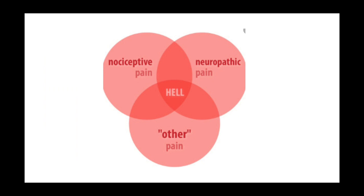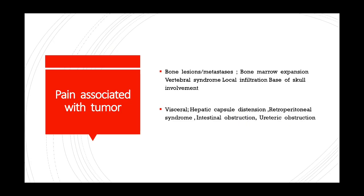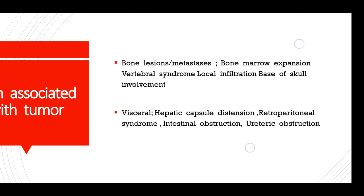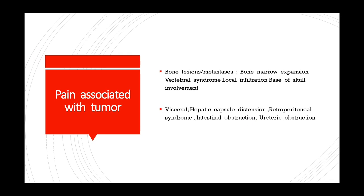This figure shows the different types of pain that can be described by a patient with malignancy. Pain associated with the tumor could be bone lesions resulting from metastasis, such as bone marrow expansion, vertebral syndrome, or local infiltration of the base of the skull, causing bone pain. The pain may also be visceral, for example from hepatic capsule distension, retroperitoneal syndrome, intestinal obstruction, or ureteric obstruction, all of which can give rise to visceral pain.